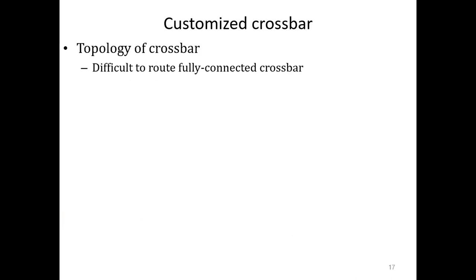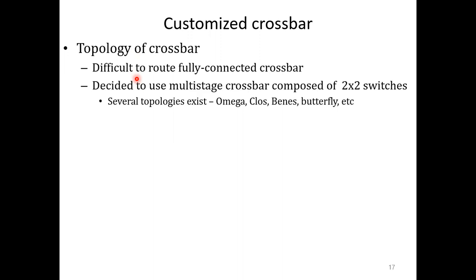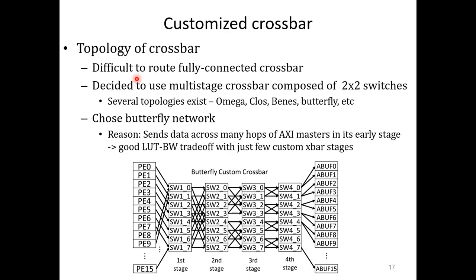In order to overcome the limitation of the built-in crossbar, we inserted a custom one. We first implemented the custom crossbar in a fully connected network, but we found it very difficult to route. So we decided to use a multi-stage crossbar composed of 2x2 switches. Among many different topologies, we chose the butterfly network. The reason is that we can send data across many hops of AXI masters with just the first few stages, so it leads to good LUT bandwidth trade-off.